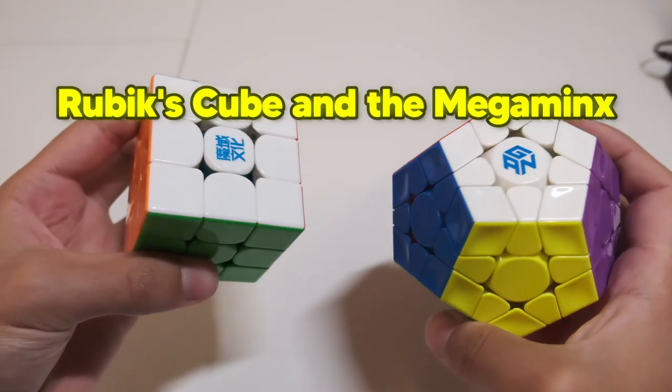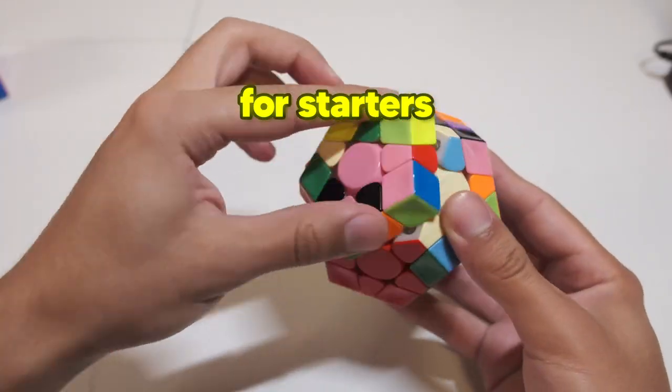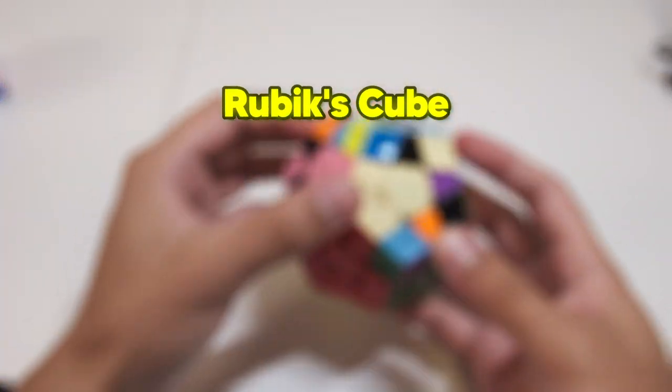Here's how the Rubik's Cube and the Megaminx are similar to each other. For starters, the first step in solving the Rubik's Cube is to make the cross.